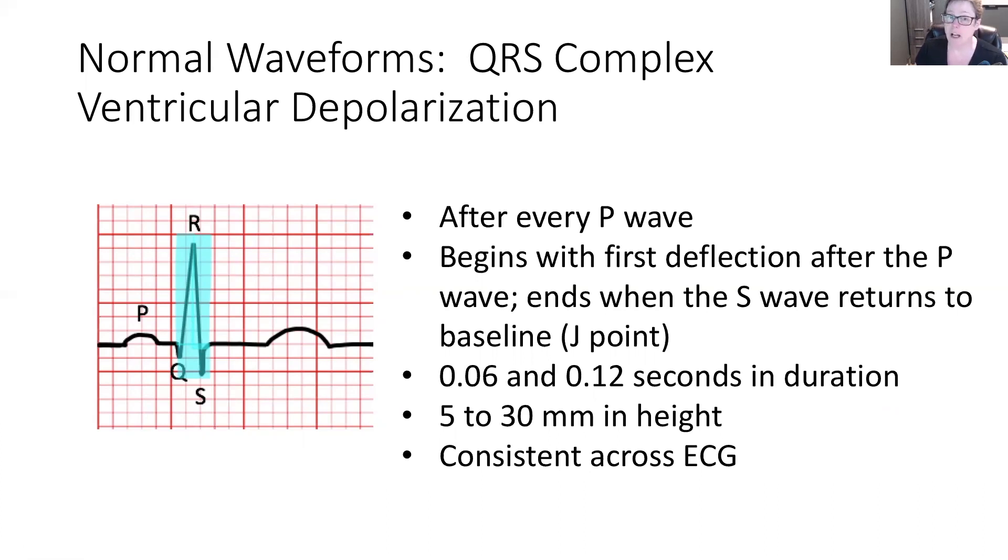If we were to measure this and take our calipers out or our sheet of paper, this would be between 0.06, so one and a half small boxes, to 0.12 seconds, that would be three small boxes in duration. Now the amplitude is generally 5 to 30 millimeters. And we're not going to measure that in this course. We're not going to focus on amplitude until we get to only one particular element. So we'll just note that that would be a normal amplitude and move on. This should be consistent all the way across your ECG. They should look the same. This is the part that is responsible for ventricular contraction or depolarization.